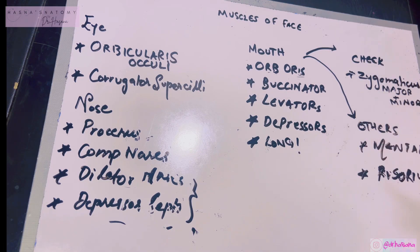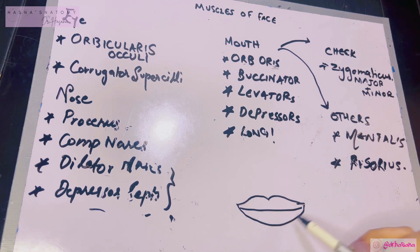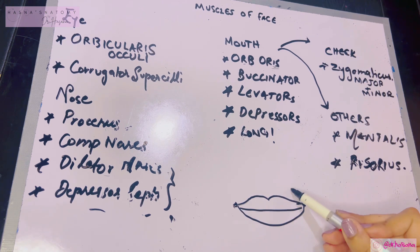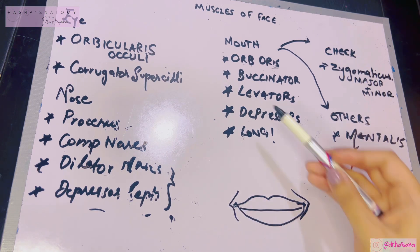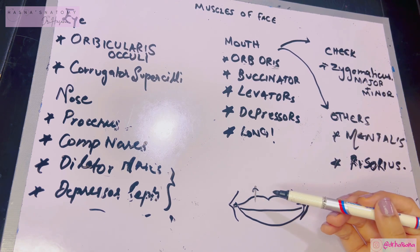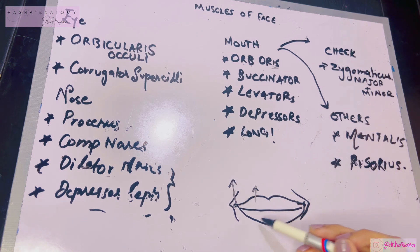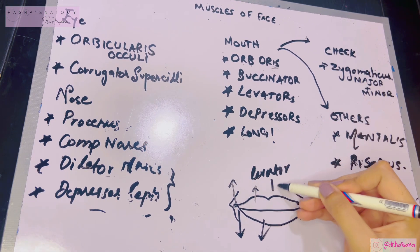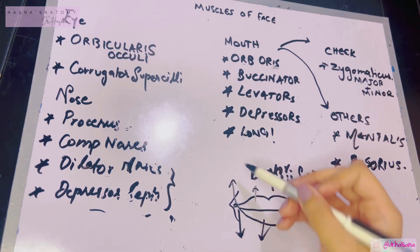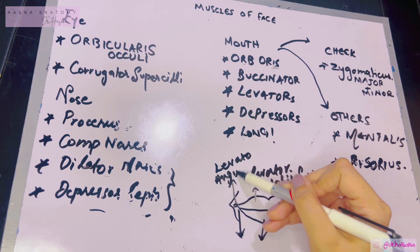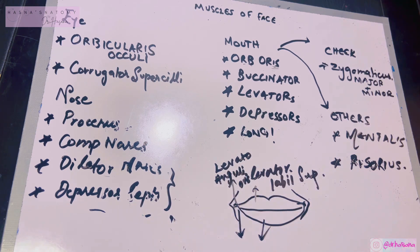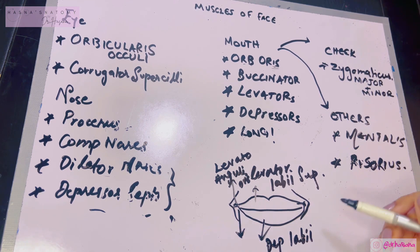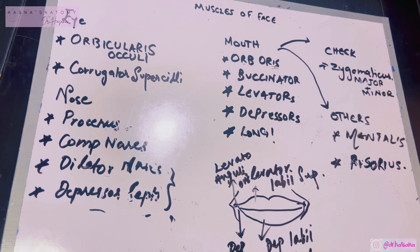The mouth has lips and an angle of the mouth — where the upper lip meets the lower lip. You need a levator for elevating the lips and a levator for elevating the angle of the mouth, plus matching depressors. The names follow this logic: levator labii superioris (labii = lips, superioris = above), levator anguli oris (anguli = angle, oris = oral), depressor labii inferioris (inferioris = inferior), and depressor anguli oris. That way you learn four muscles just from the naming pattern.